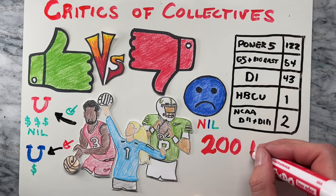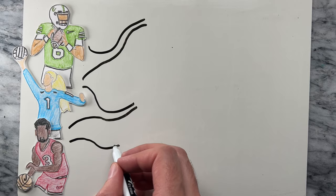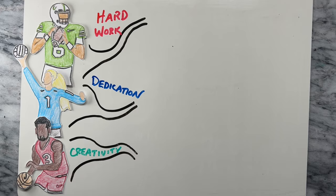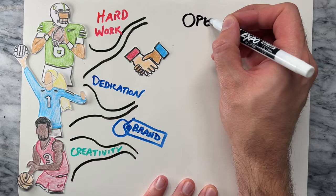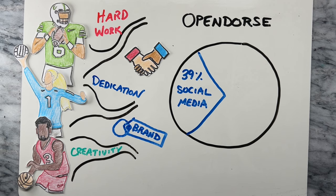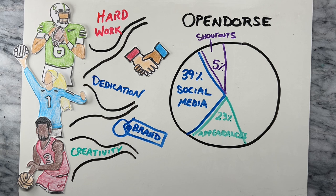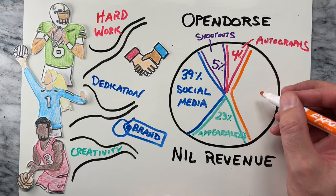College athletes now have the ability to shape their own futures and benefit from their hard work, dedication, and creativity with their partnerships and brand beyond their sport performance. Athletes have numerous ways to earn money from NIL. According to Open Doors, 39% of NIL revenue comes from social media promotions, 23% comes from appearances, 5% comes from shout-outs, 4% comes from autographs, and 29% comes from other ancillary opportunities.